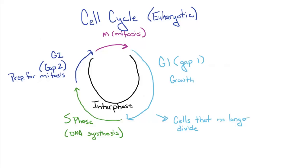G1, S, and G2 phases are collectively termed interphase, which means the cell is not actively dividing.